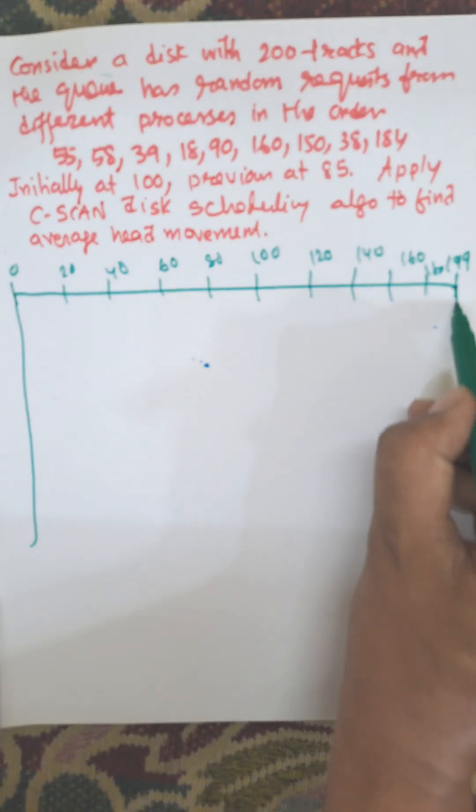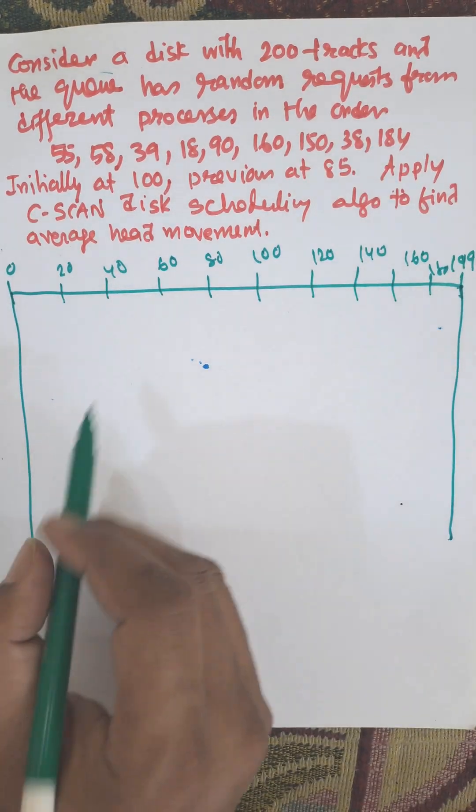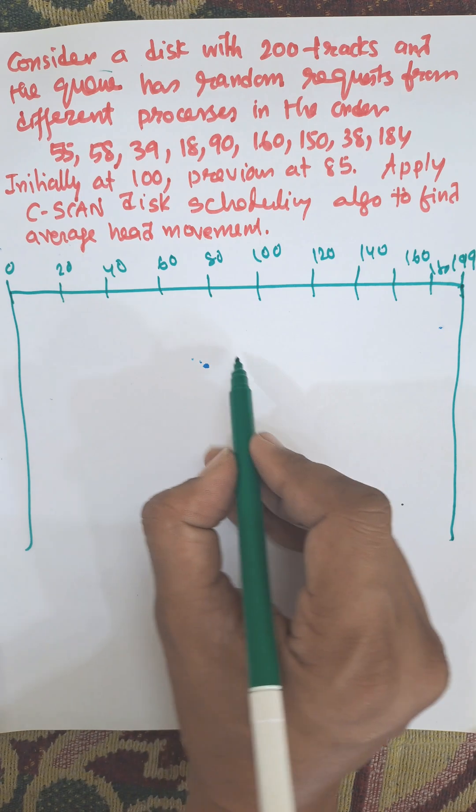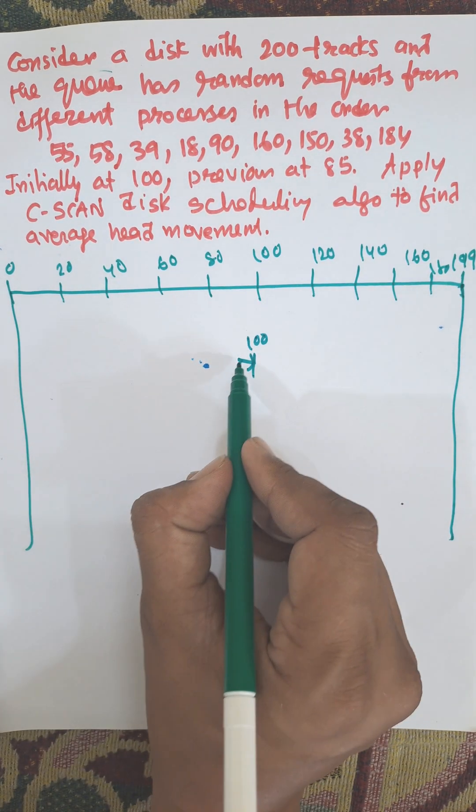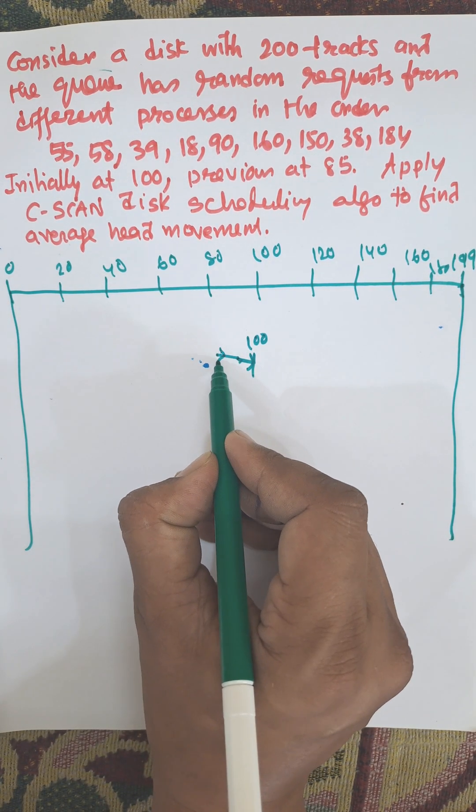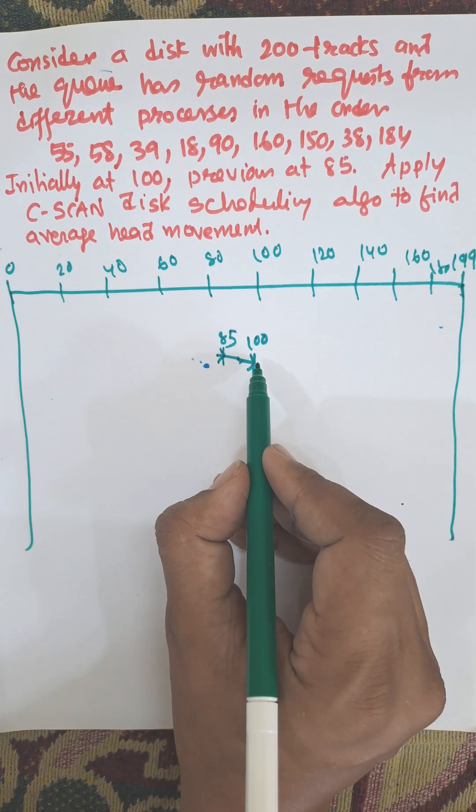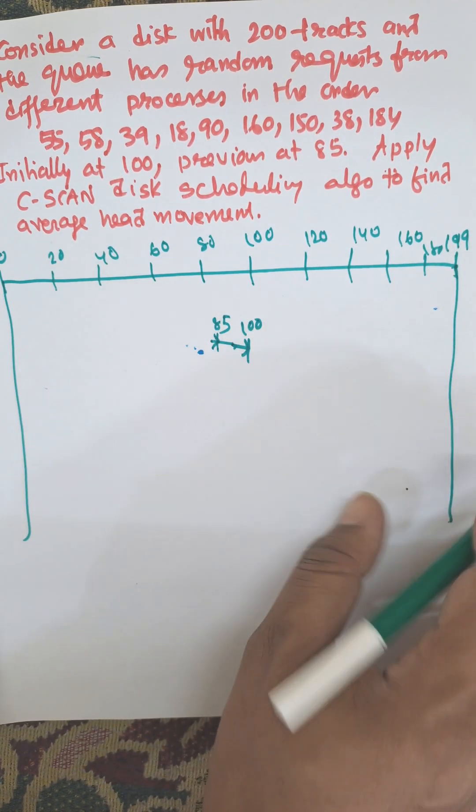So this is the total number of tracks. Initially at 100, the initial is the most important thing, and previous was 85. We will consider everything, every calculation from this initial state.